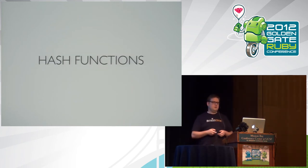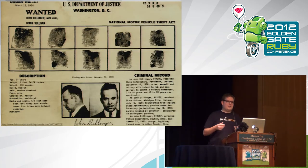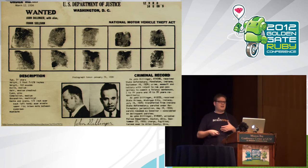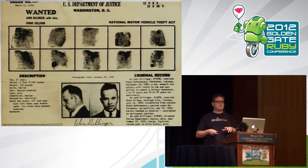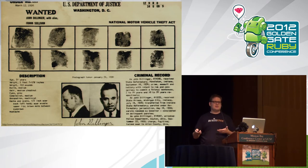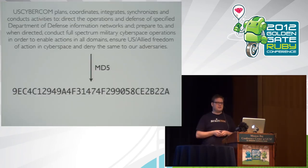The next thing I want to talk about is length extension attacks, but first we need to talk about hash functions. I like to think of hash functions as fingerprints. The really important thing is that a hash function is one-way and not reversible — just like a fingerprint, without a fingerprint database you can't take someone's fingerprint and know whose it is. Ideally no two inputs to a hash function would have the same hash output.